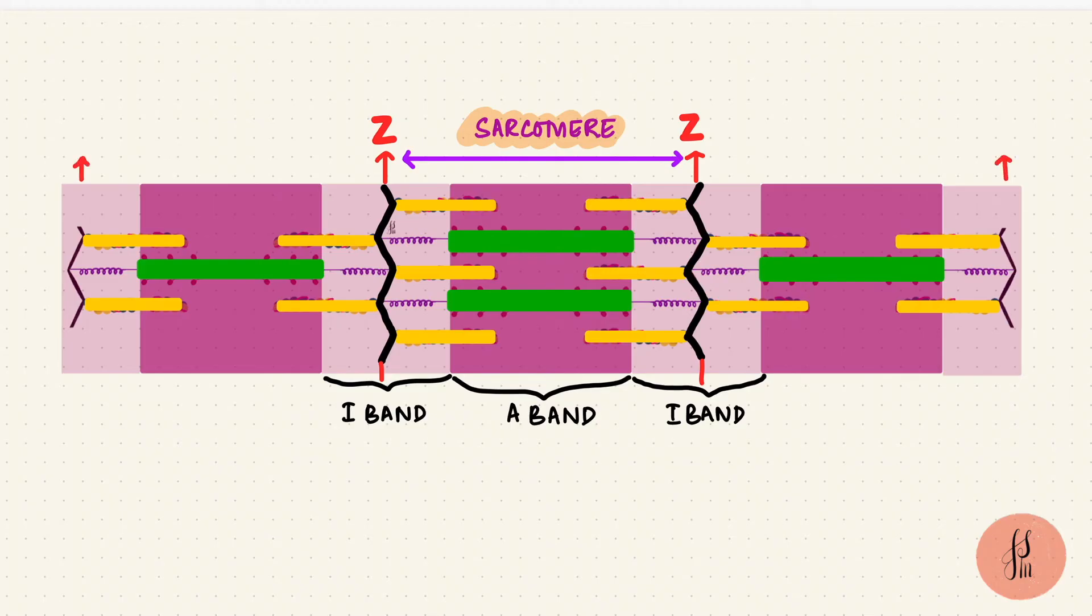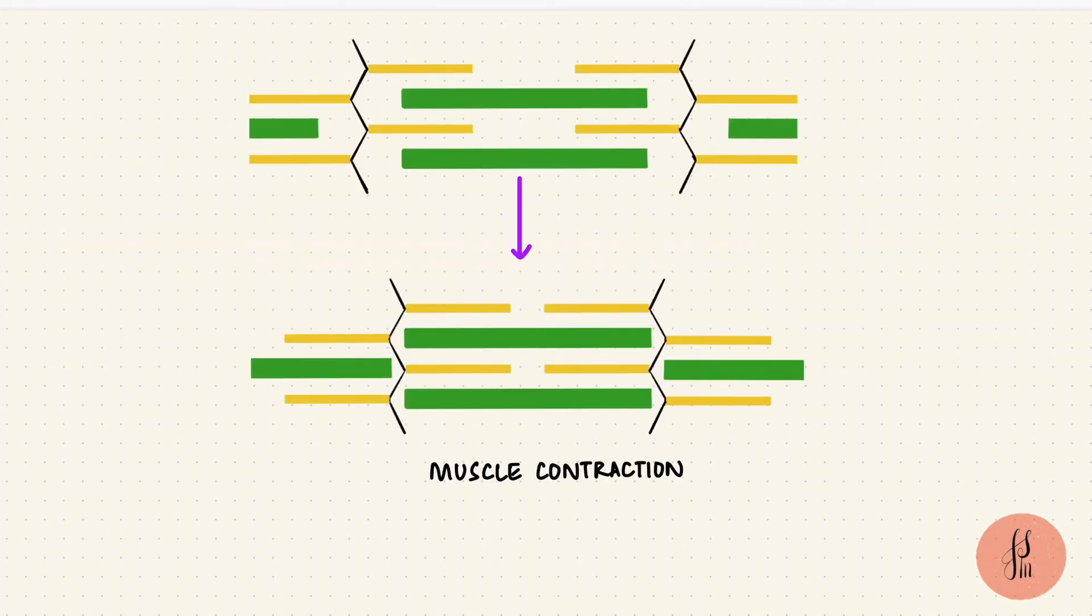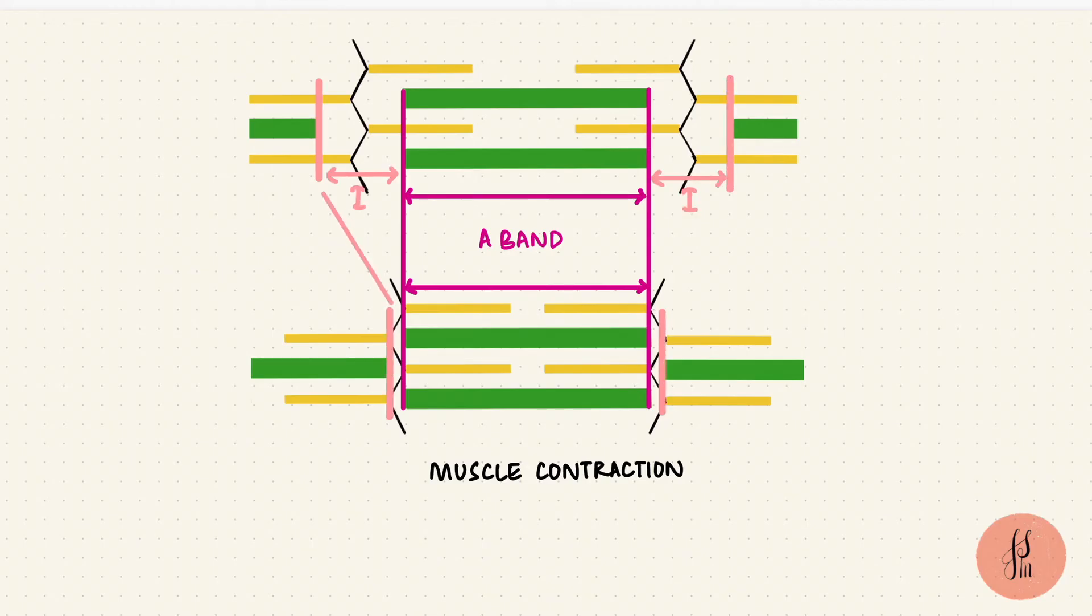The sarcomeres repeat one after the other along the length of a myofibril, and when the sarcomere shortens, that results in a muscle contraction. The shortening happens with the movement of the thin filaments. The thick filaments stay in place, they don't move. So when the sarcomere shortens, the A band doesn't change in dimensions, but the I band shortens, and the Z disks move closer together.